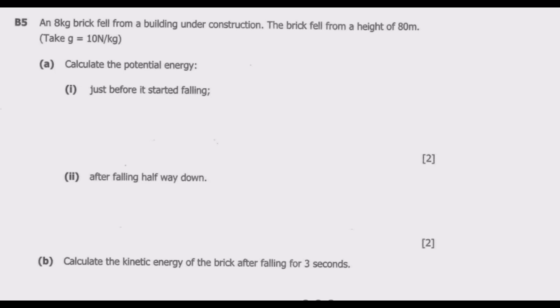Let us look at question B5. An 8 kg brick fell from a building under construction. The brick fell from a height of 80 meters, taking gravity to be 10 newtons per kg. Calculate the potential energy just before it started falling.